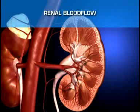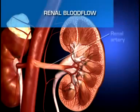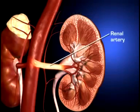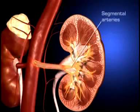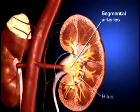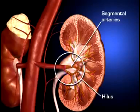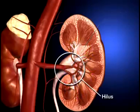Each kidney is supplied with blood by a single renal artery that arises on its respective side of the aorta before dividing into five segmental arteries that enter the hilus. Within the kidney, each segmental artery branches into several lobular arteries.